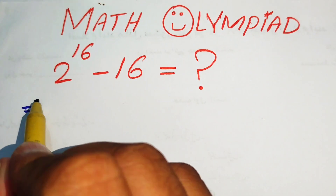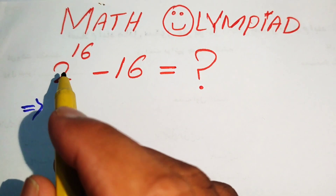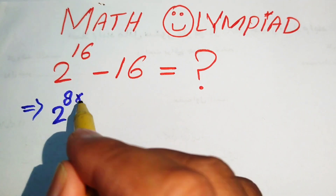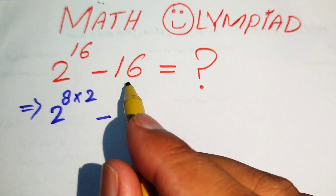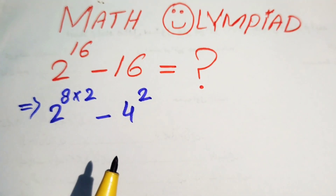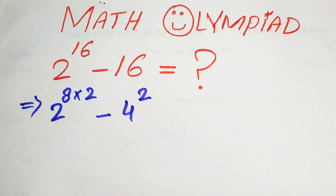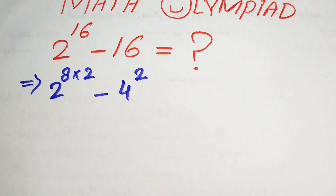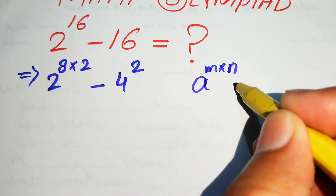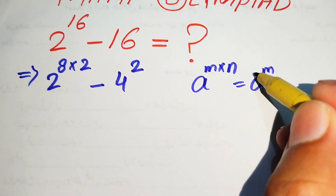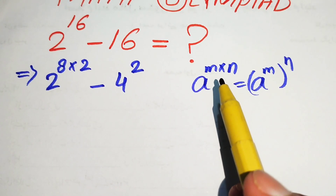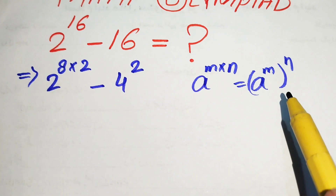The very first step we are going to do is rewrite this equation. We have 2 to the power of 16 and we write it as 2 to the power of 8 multiplied by 2, and we write 16 as 4 squared because the square of 4 equals 16. We use the exponential law: if we have a to the power of m multiplied by n, we write it as a to the power of m, whole power n. So if you have 2 terms multiplied in an exponent, we break the exponent in this form.